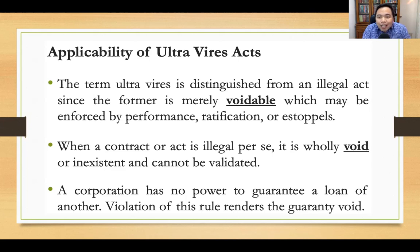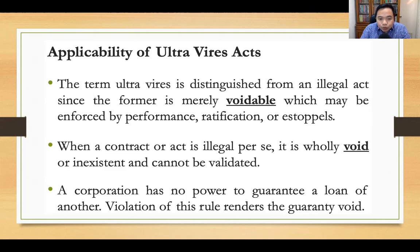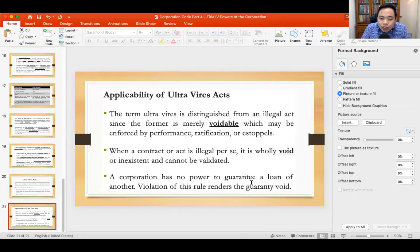Take note that a corporation cannot guarantee the loan of another corporation or individual — you cannot find that power in the enumeration under Section 36. The violation of this prohibition renders the guarantee void and not merely voidable. This ends the presentation on Title IV: Powers of the Corporation. See you again for the next episode.